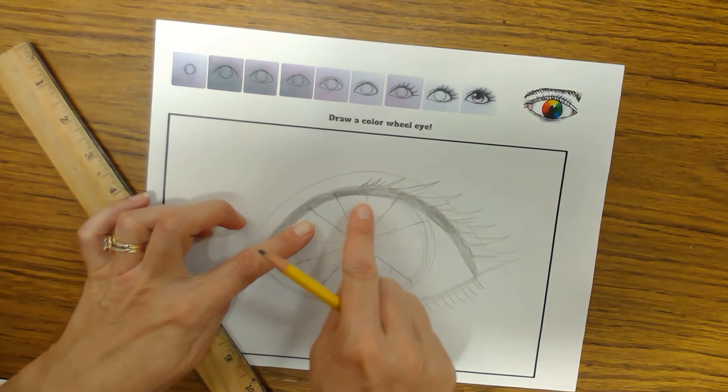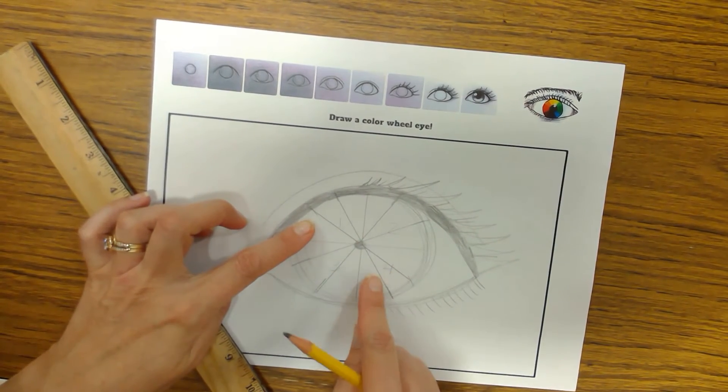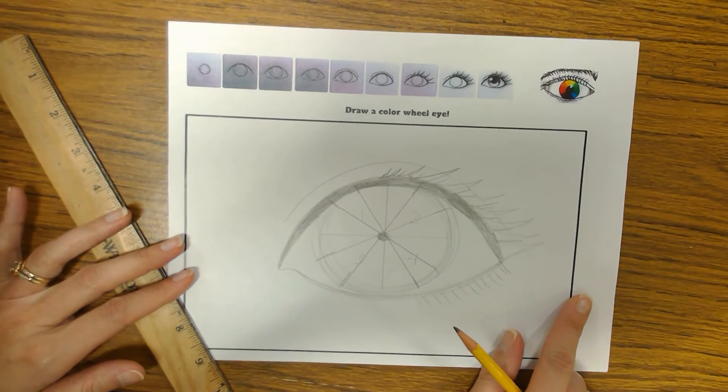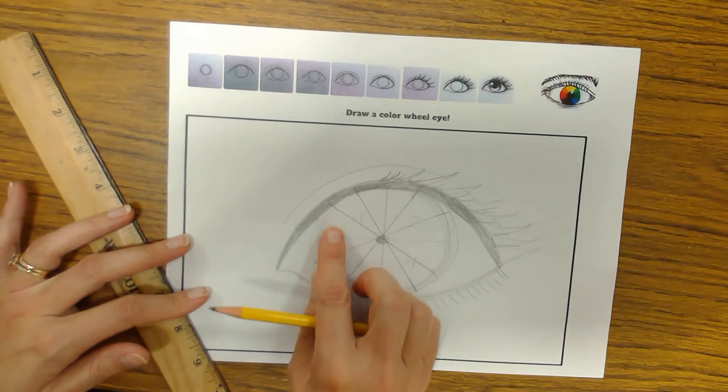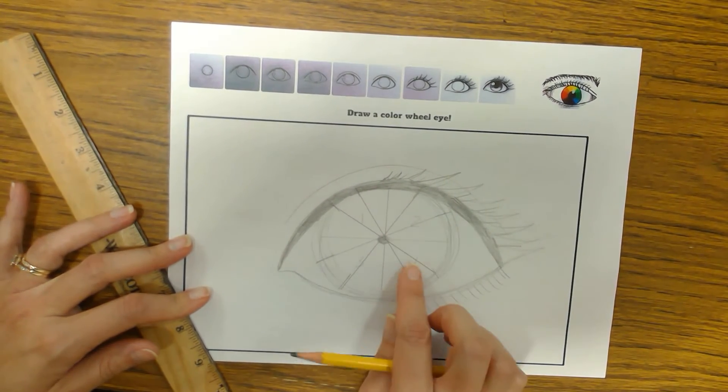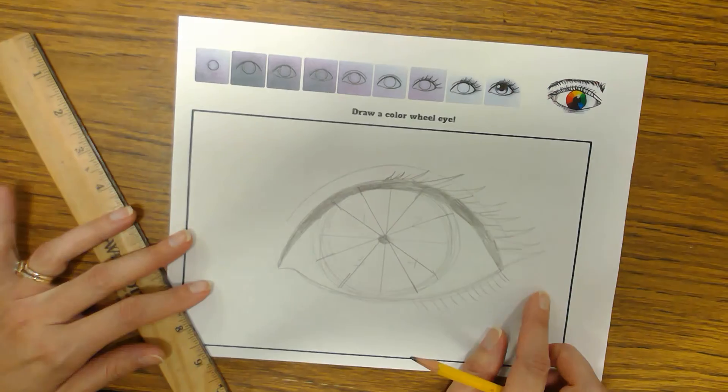So I'm going to double count to make sure I have 12. So 1, 2, 3, 4, 5, 6, 7, 8, 9, 10, 11, 12. So hopefully that is helpful in teaching you how to equally divide a circle into 12 equal sections or parts.